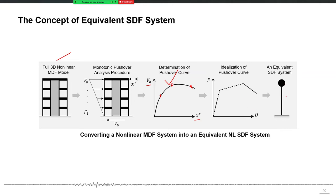An elastic single degree of freedom system will have a constant k value. An inelastic single degree of freedom system, instead of having a constant k value, will have a complete force versus deformation curve as an input. So if we give this particular force deformation behavior to a single degree of freedom system, that system will start behaving dynamically like the multiple degree of freedom system, because its global behavior is mapped through the pushover curve.